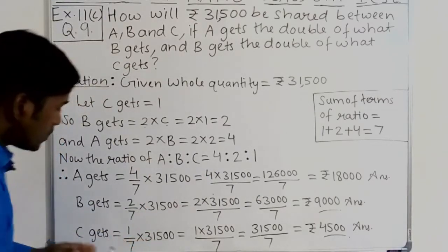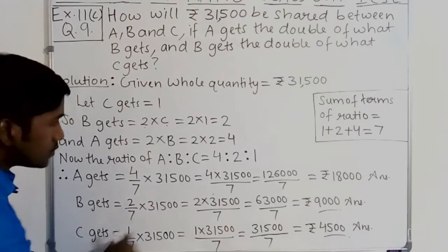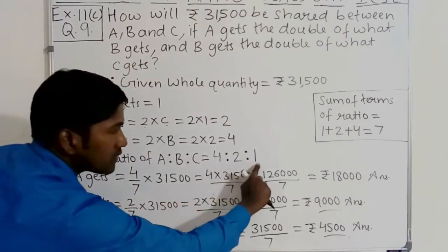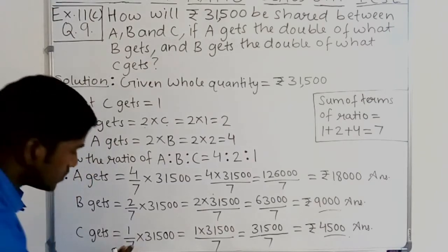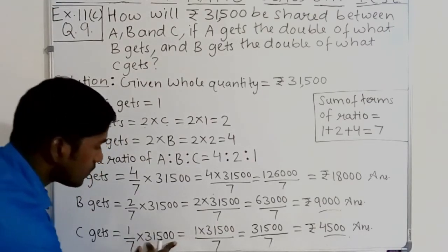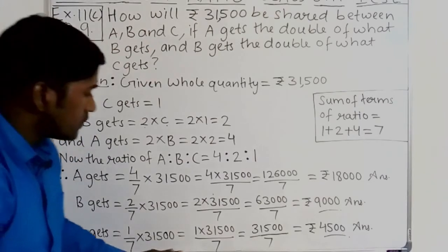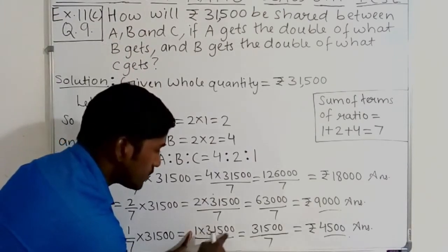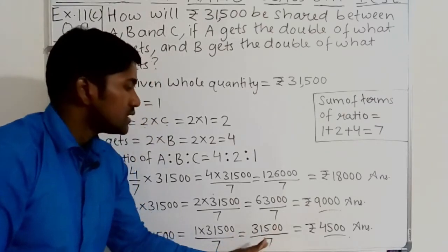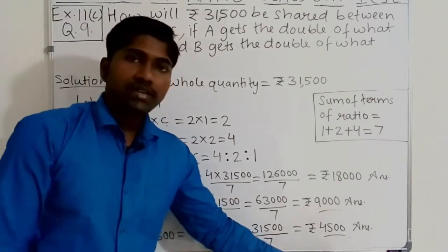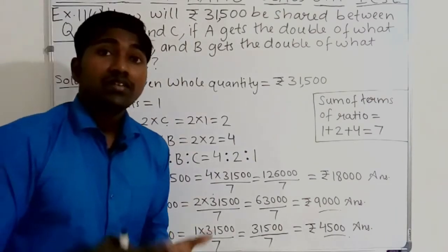Now we will calculate how much C gets. C gets equal to the third part, so C gets equal to the third term of the ratio, which is 1, divided by the sum of terms of the ratio, which is 7, then multiplied by the whole quantity 31,500. Evaluate it: 1 into 31,500 divided by 7 equals 31,500 divided by 7, equal to 4,500. So C gets rupees 4,500.